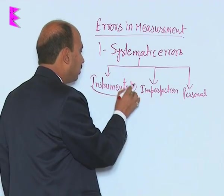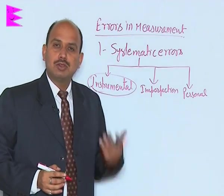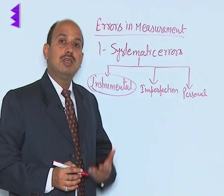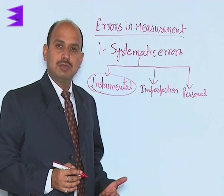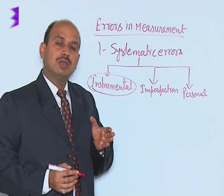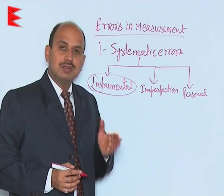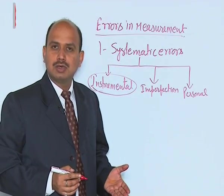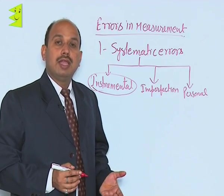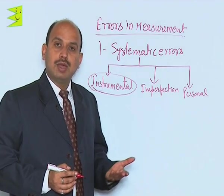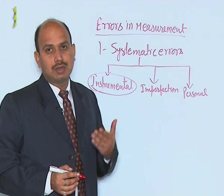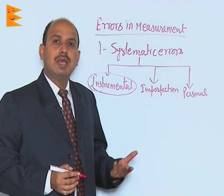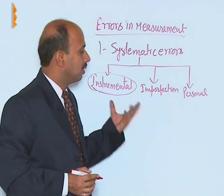Instrumental error occurs when, for example, calibration of the instrument has not been done correctly. In vernier calipers, the zero of the vernier scale may not coincide with the zero of the main scale — it may be to the left or right. This means the vernier calipers may have a zero error, which can be positive or negative. These types of errors are known as instrumental errors.